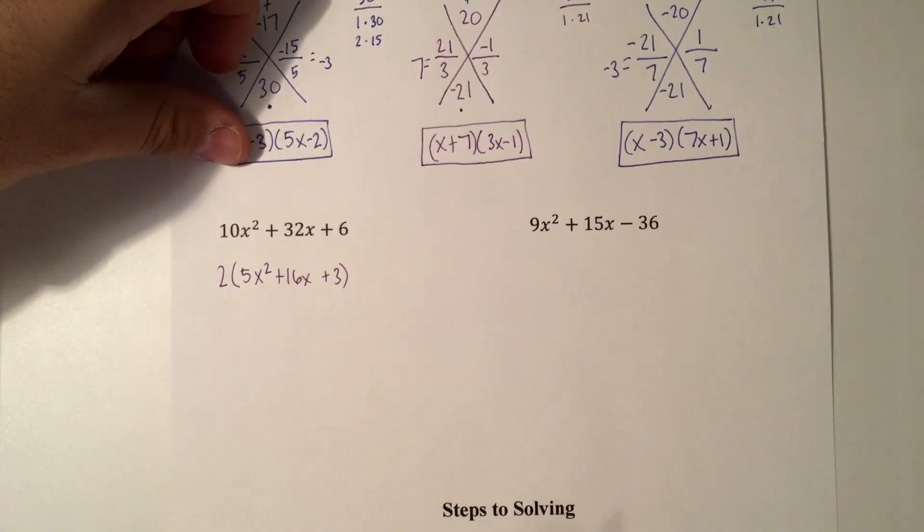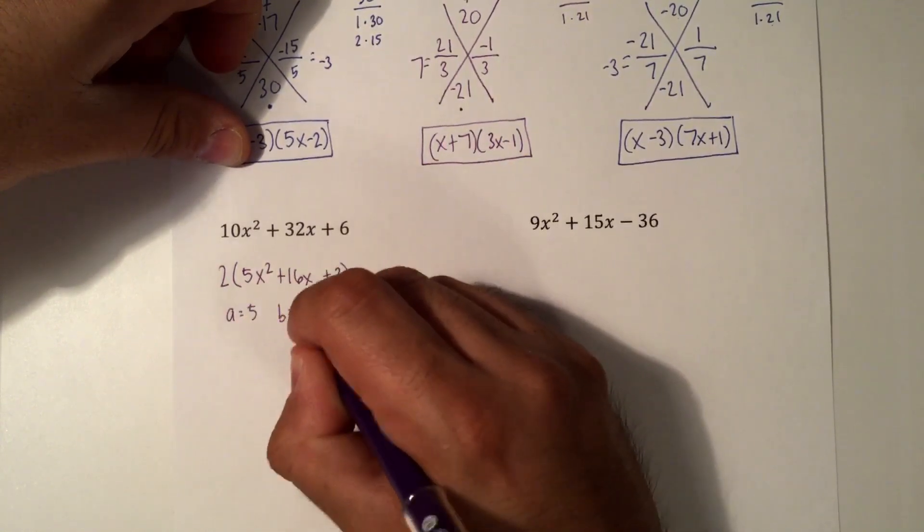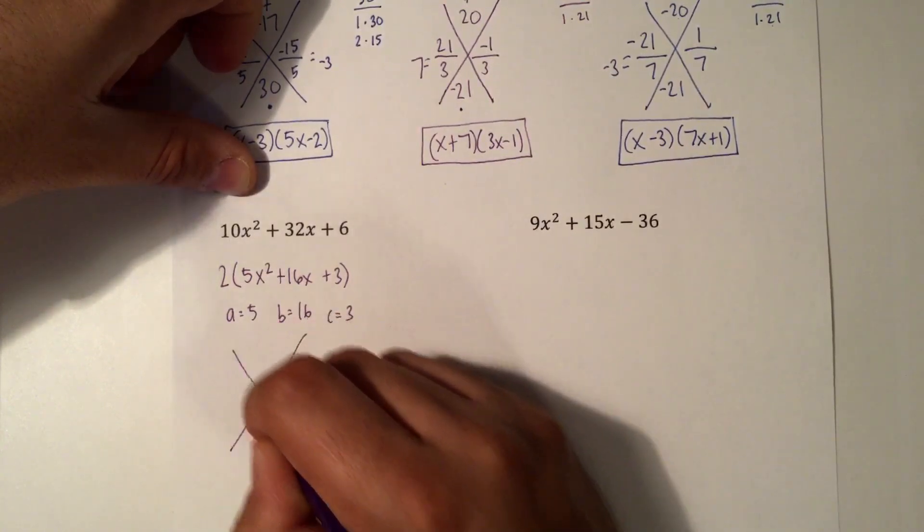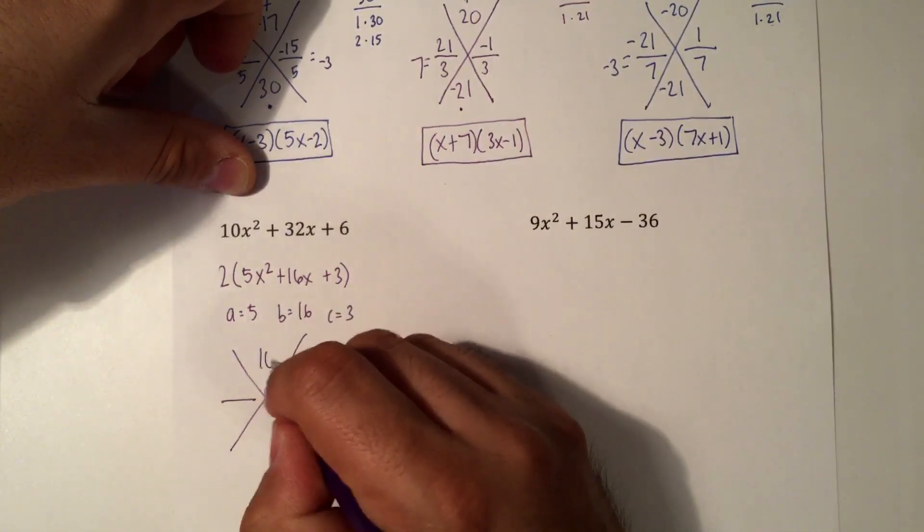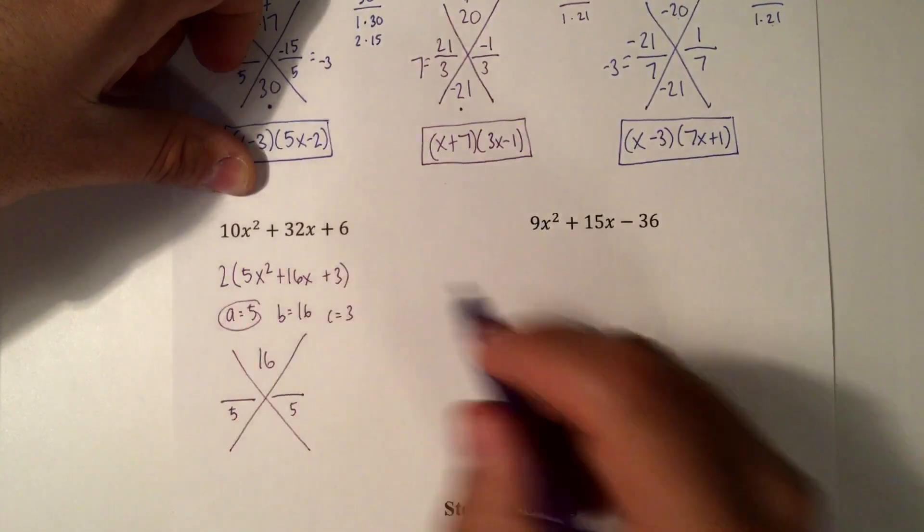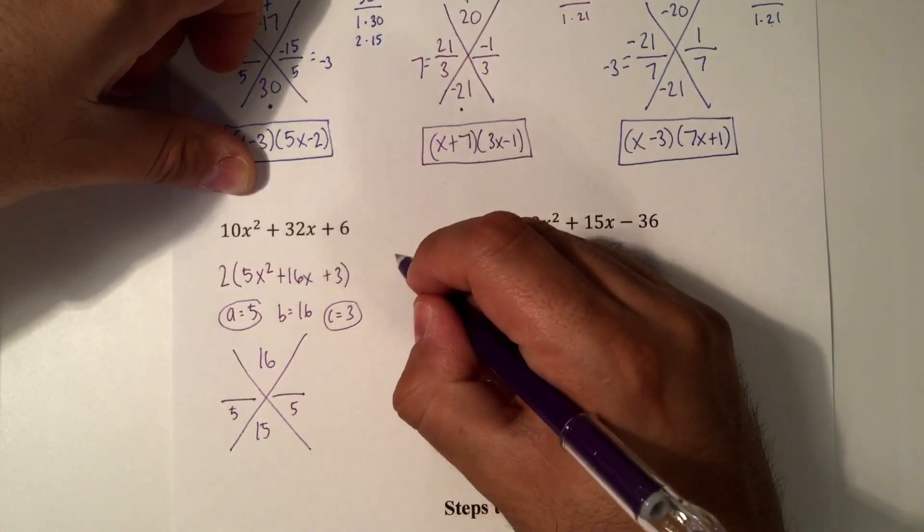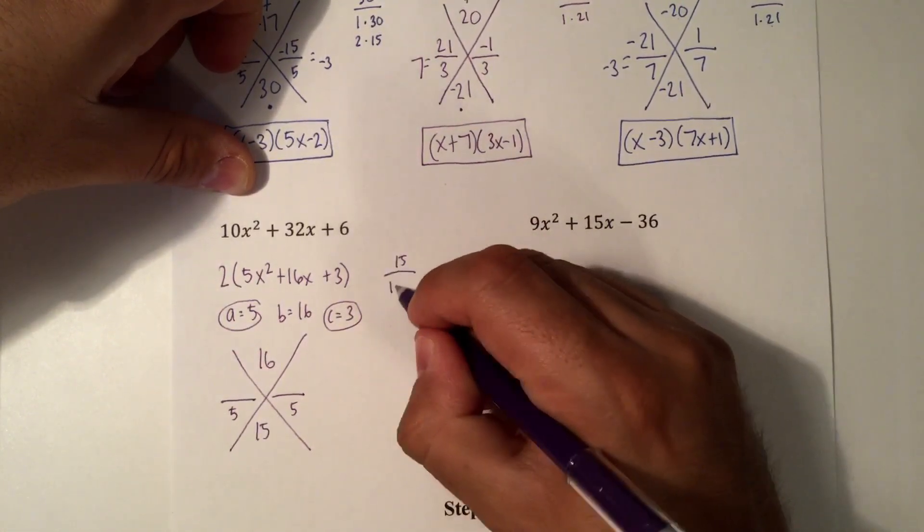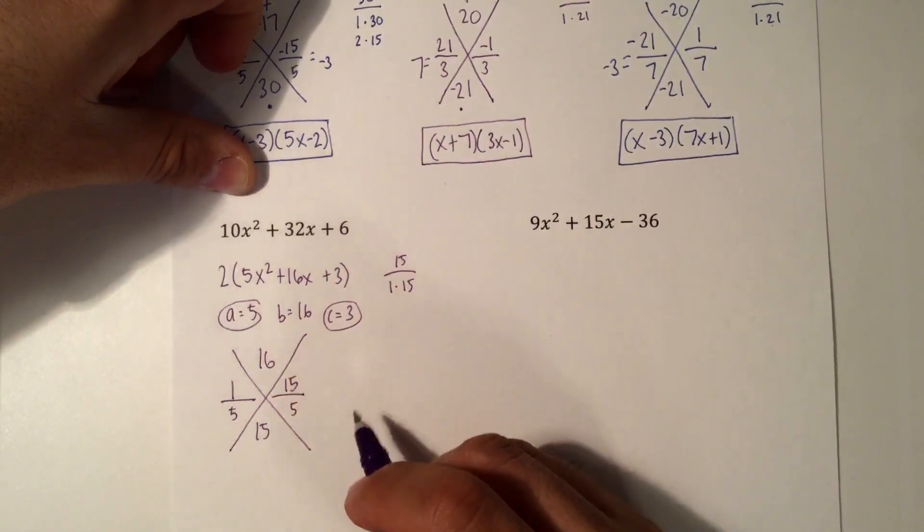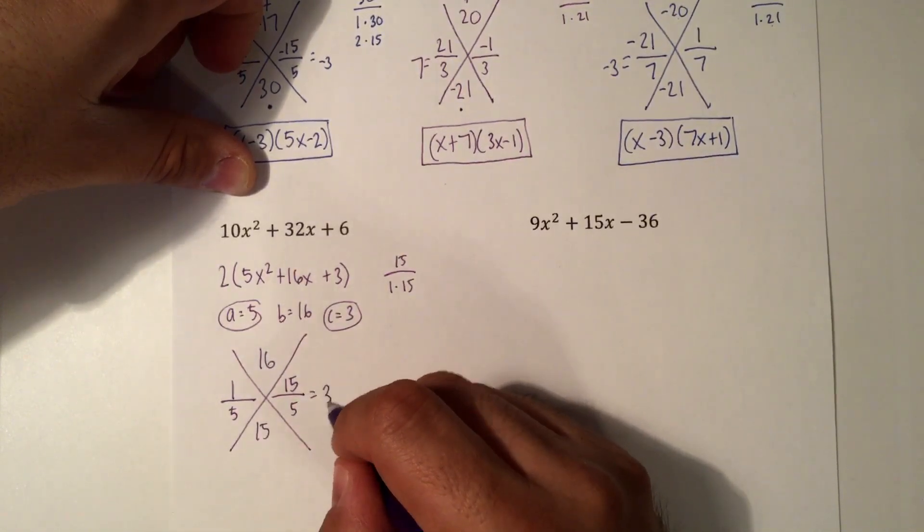From here, we're going to identify our A, B, and C. So A is 5, B is 16, and C is 3. So now we have the x. 16 on the top. Divide by A, which is 5. We multiply A times C, which is 15. Once again, you can do 15 and 1 times 15. So 1 plus 15 is 16. So we now know it's 1 and 15. We're going to reduce. 1 fifth does not reduce. 15 divided by 5 is 3.